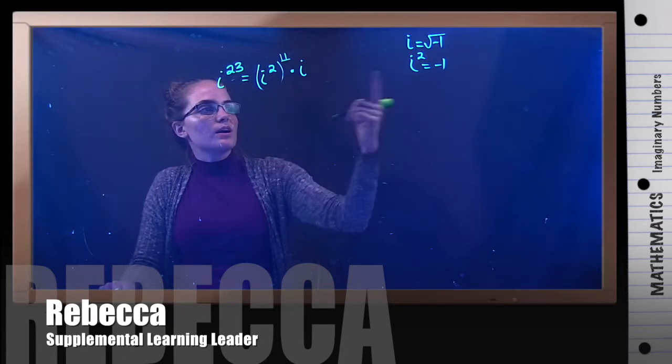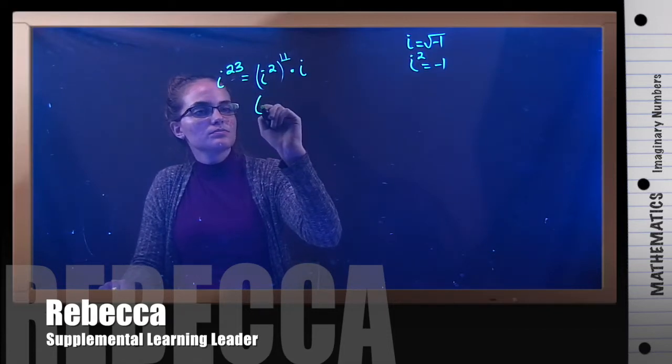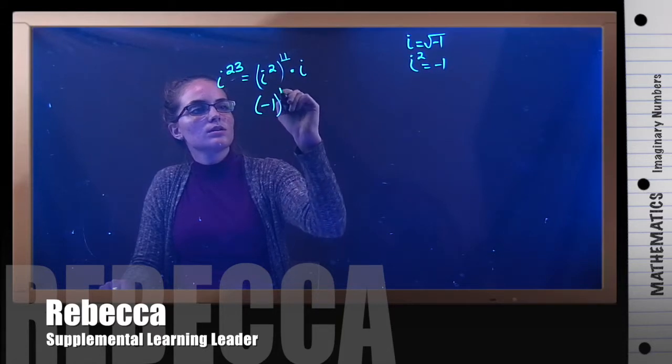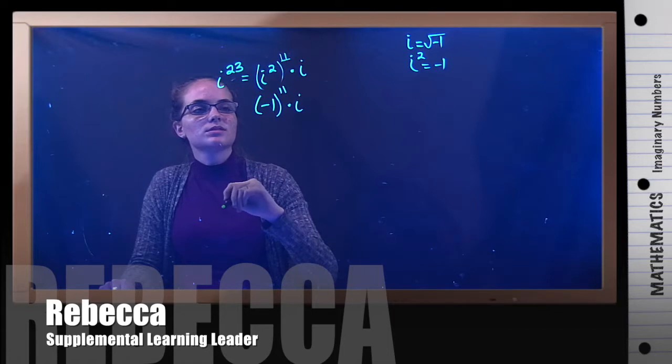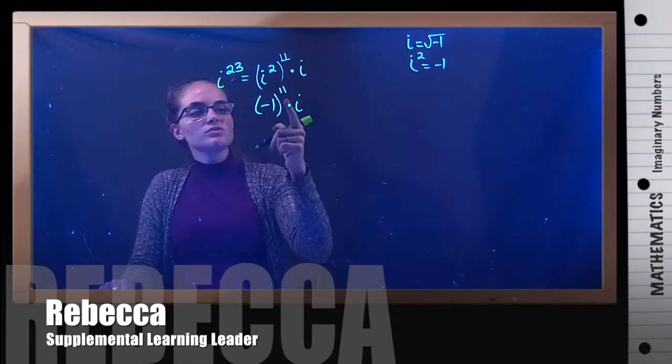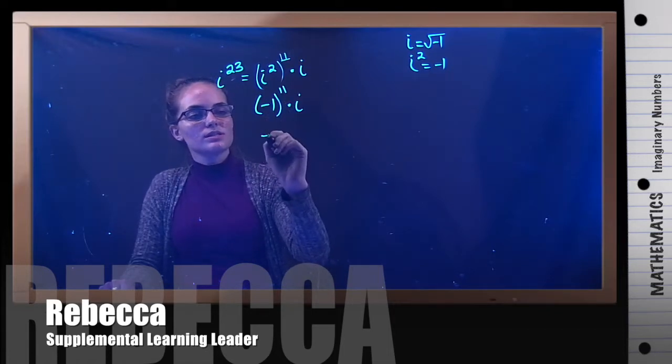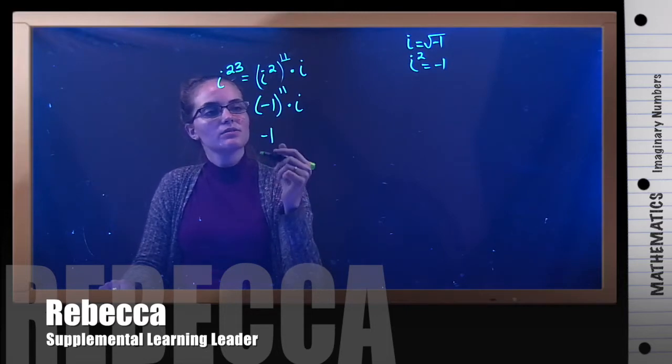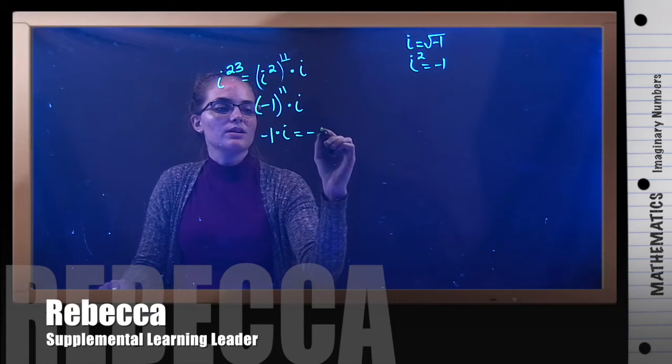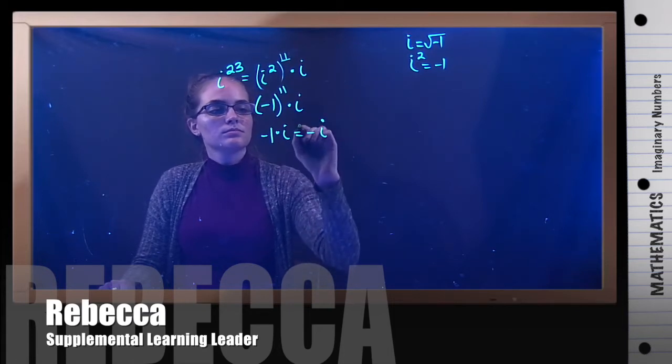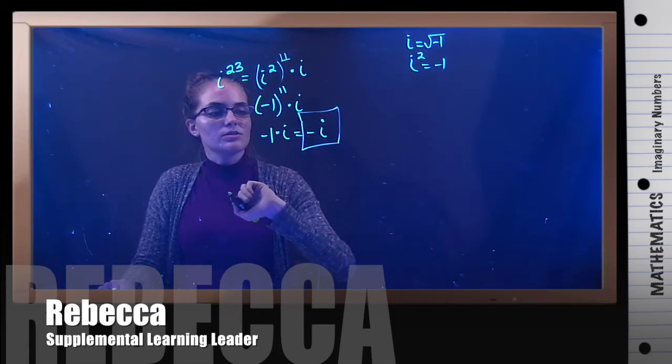And now I can replace my i squared with negative 1. So I have negative 1 to the 11th power times i. Negative 1 to the 11th power is negative 1, because it's an odd amount of negatives. Negative 1 times i will be negative i. And that's our final answer.